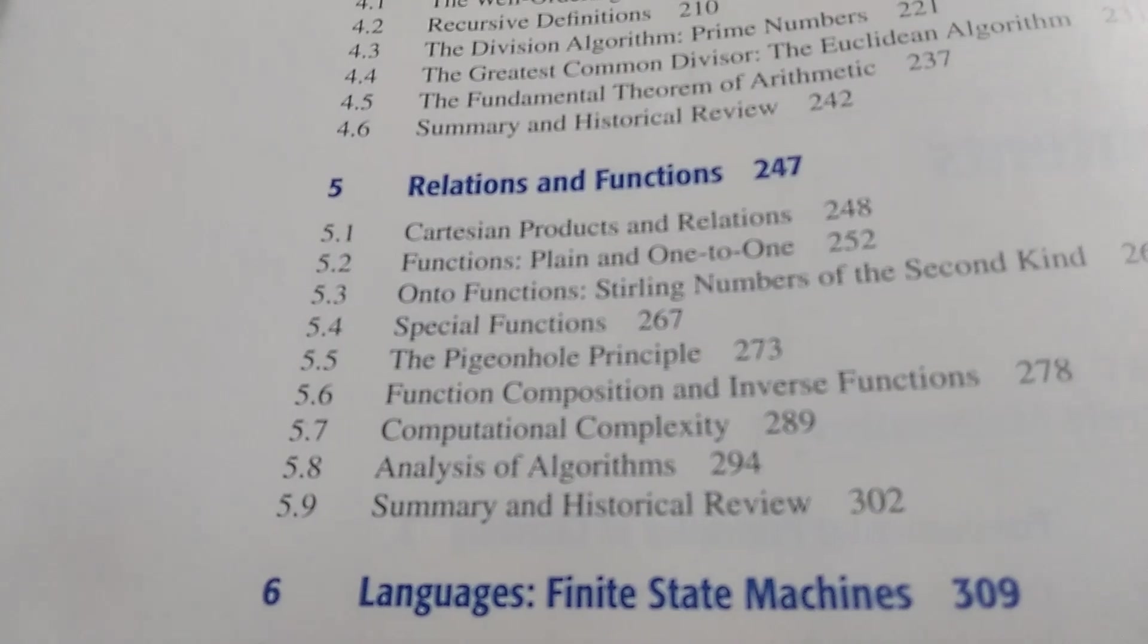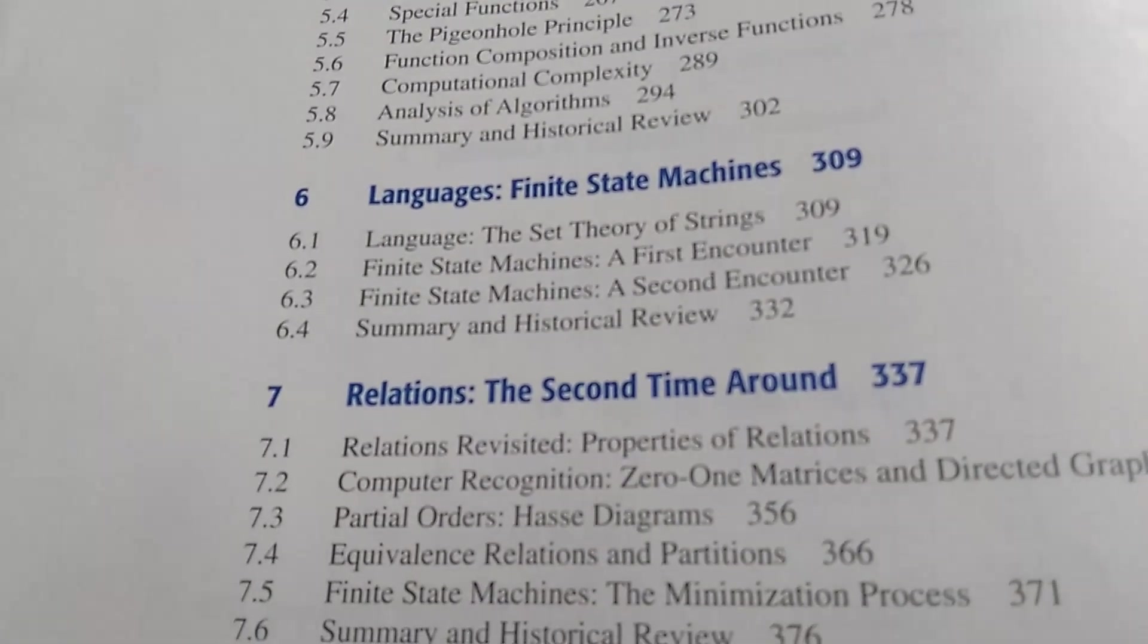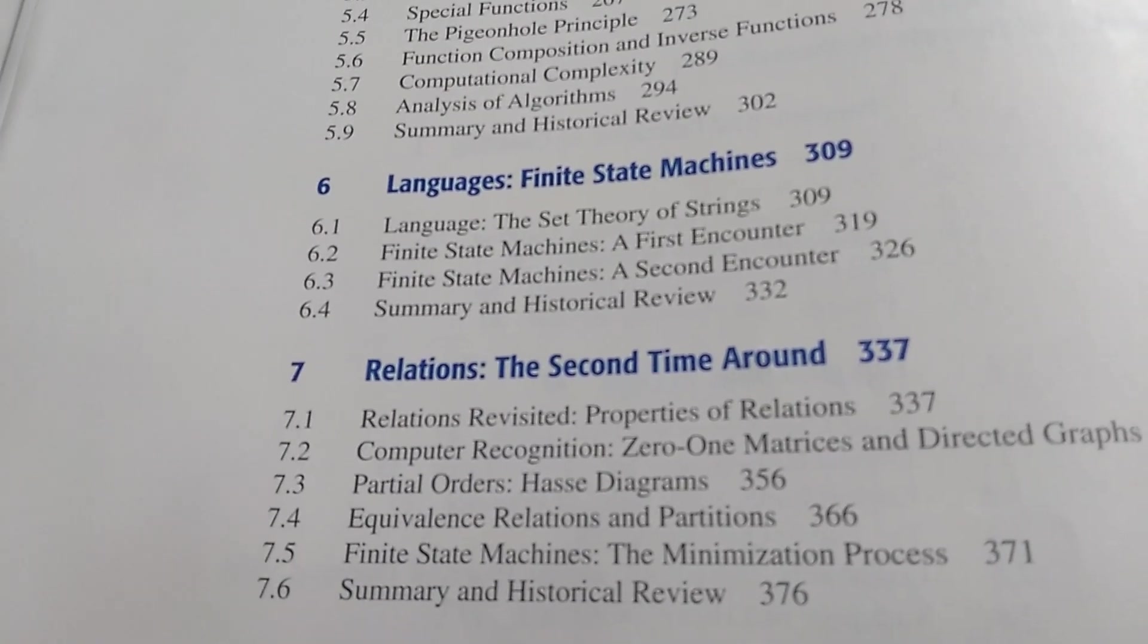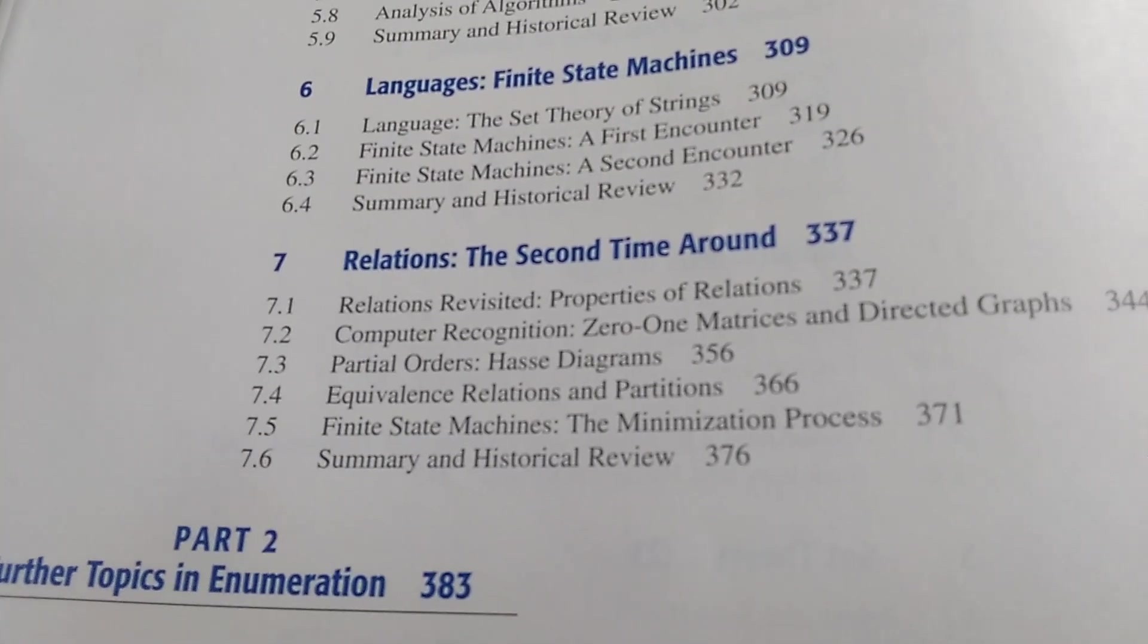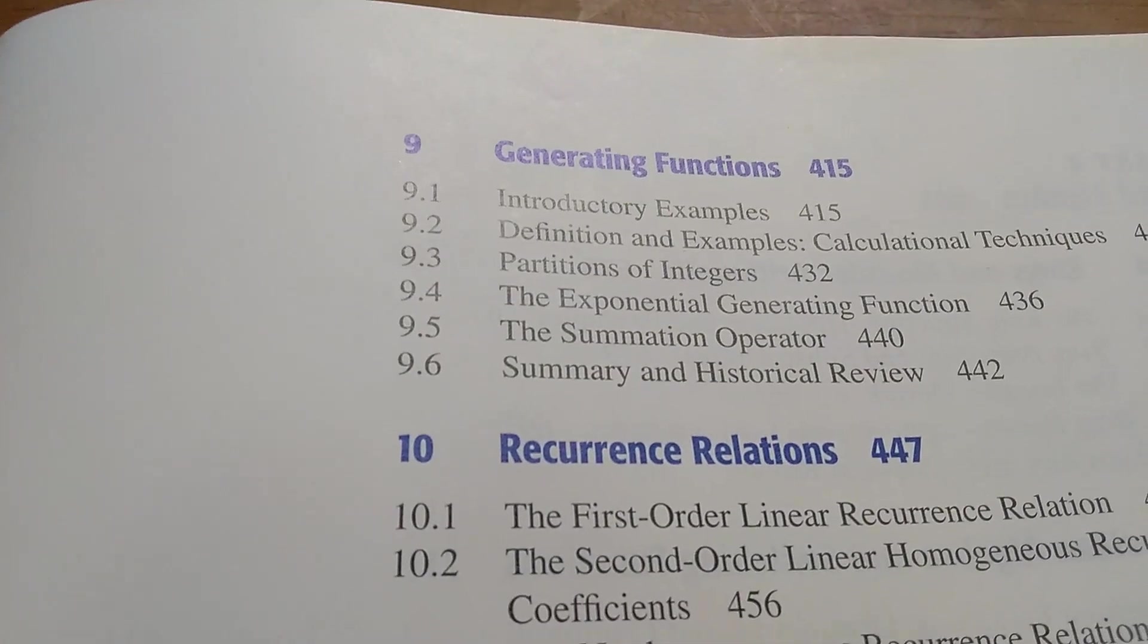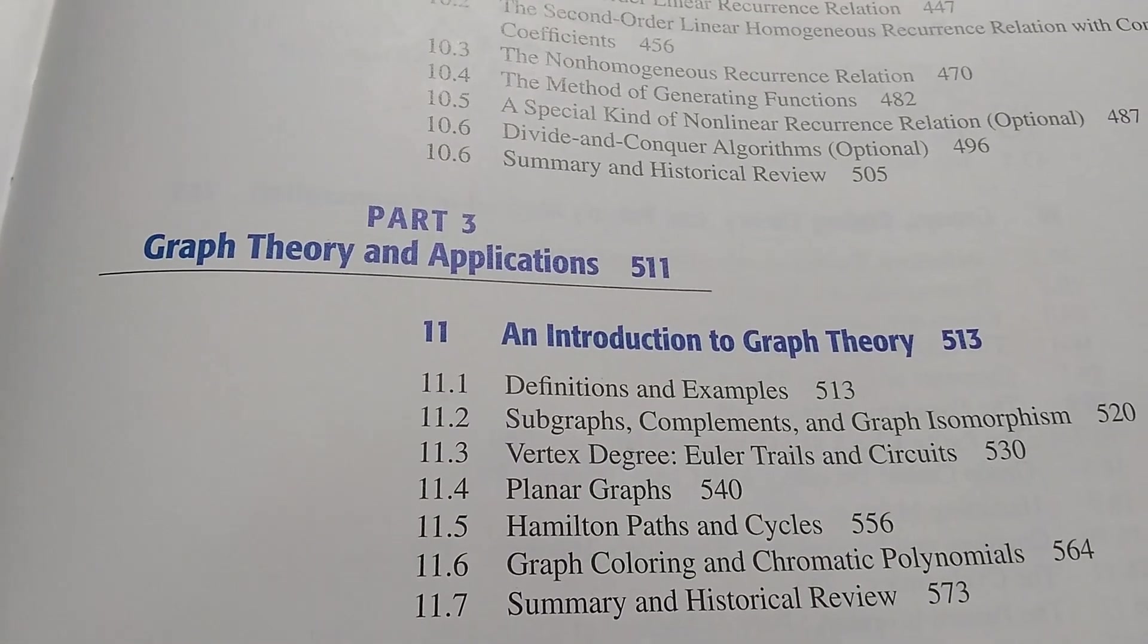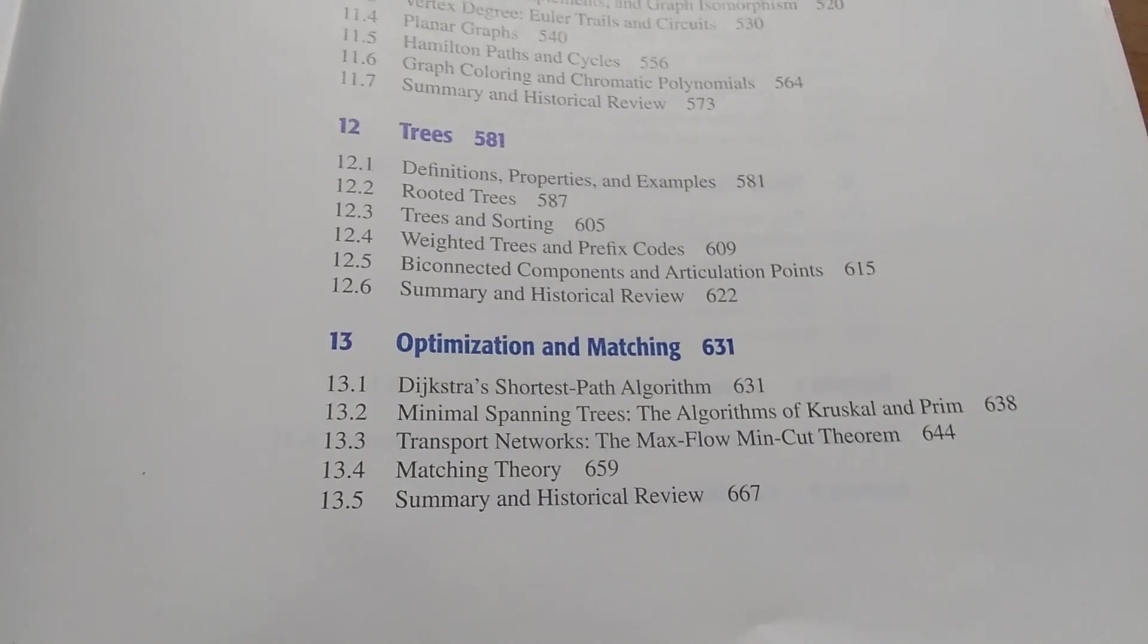Then he goes on to talk about relations and functions, and then finite state machines. I have never read this chapter. And then relations the second time around. I'm not familiar with this chapter either. Inclusion-exclusion, generating functions, and then recurrence relations. Then he goes on to discuss graph theory, trees, and optimization and matching.